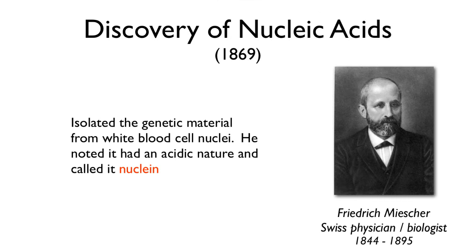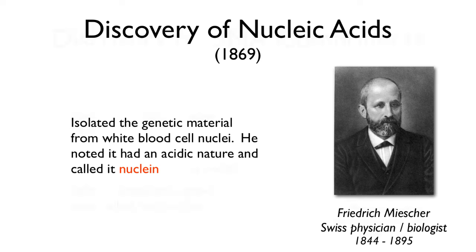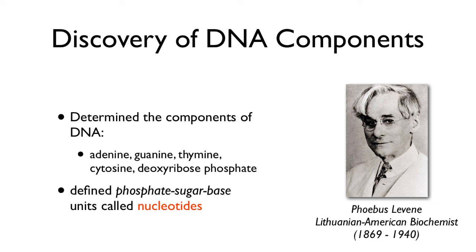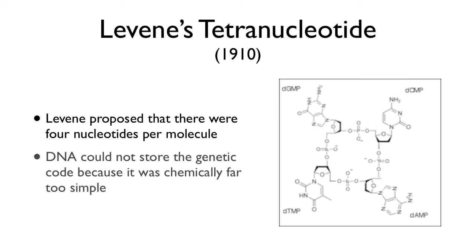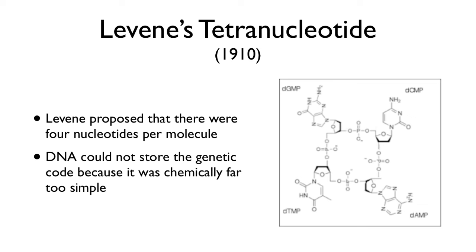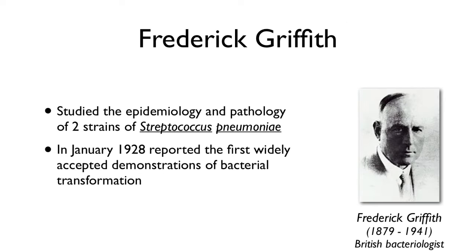We're going to take a step back and start in the mid-1800s — that's actually when nucleic acids were discovered. Shortly thereafter, Phoebus Levine discovered all of the components of DNA and defined the unit, including the sugar, the phosphate, and the base, which he called a nucleotide. That he got correct. Unfortunately, he didn't quite get the structure. He thought it was organized in tetrads — four nucleotides per molecule — making such a simple structure that it couldn't possibly be the key to unlocking heredity. He was incorrect on both counts. He died in 1940 before the importance of his work was fully understood, but he was a major contributor.